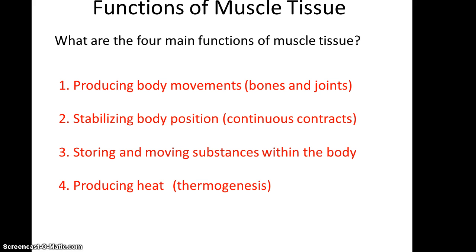So what are the functions of muscle tissue? One is producing body movements, usually across joints, moving bones, and also for stabilizing the body position. We are continuously making minor contractions in many of our back muscles and neck muscles to hold our posture. Also, muscle tissue functions in storing and moving substances within the body — the heart pumping blood throughout the body. And finally, producing heat or thermogenesis. Muscle contractions generate heat, and that's what gives us our body temperature.